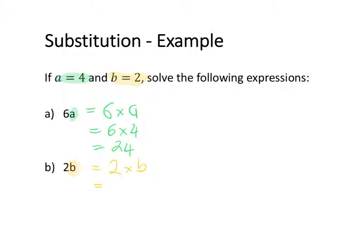This time we're going to write 2 instead of b. So 2 times 2, which equals to 4. So the value of 2b when b is equal to 2 is equal to 4.